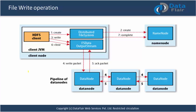We have a client node. To write a file, the client needs to send a create request to the name node. The name node checks for access rights - whether the user has access to write on the specific path. If access is granted, the name node provides the location to write the block. The client then goes directly to the data node and starts writing the packets there.